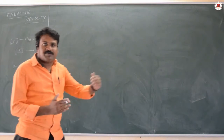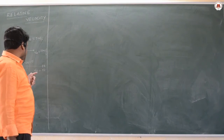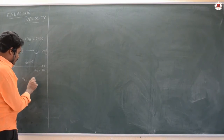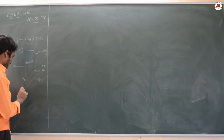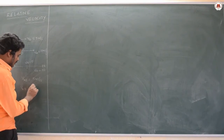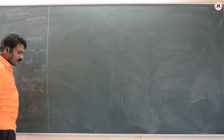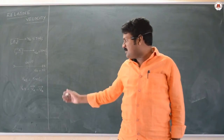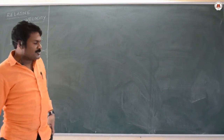So how do we write this as a formula? Velocity of A with respect to B equals V_a minus V_b — that is, V_a bar minus V_b bar. This is an example of subtraction of vectors.